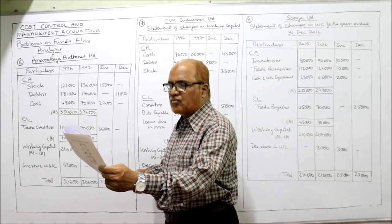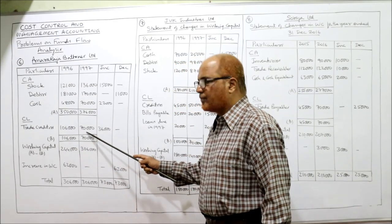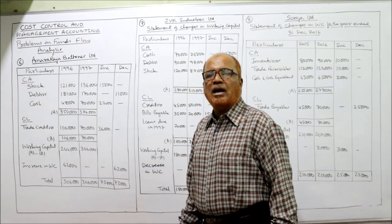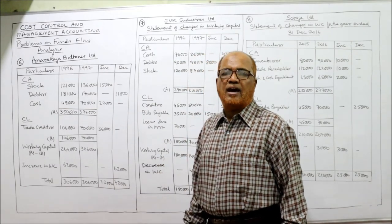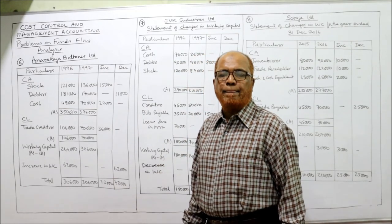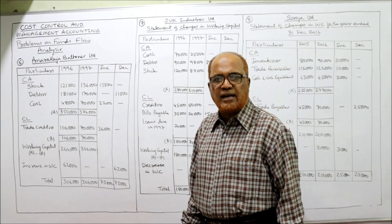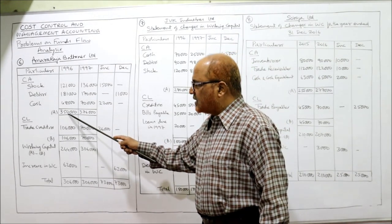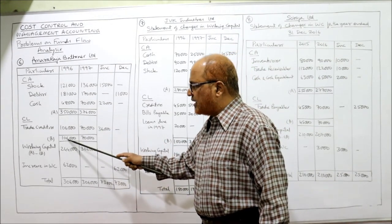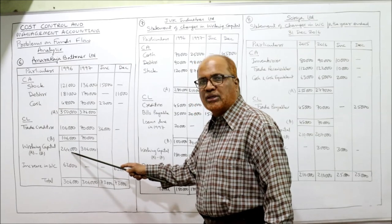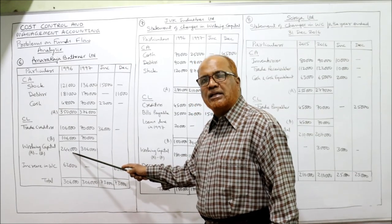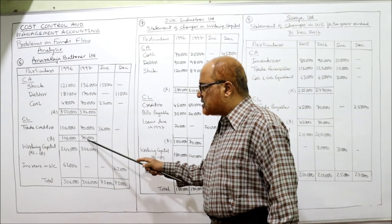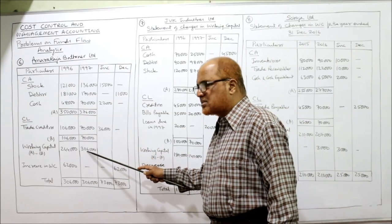Trade creditors (current liability): 1,06,000 last year and 70,000 current year. Working capital is current assets minus current liabilities. Last year: 3,50,000 minus 1,06,000 equals 2,44,000. Current year: 3,76,000 minus 70,000 equals 3,06,000. Working capital has increased from 2,44,000 to 3,06,000.